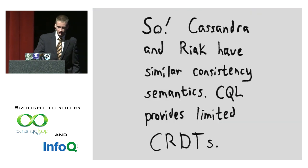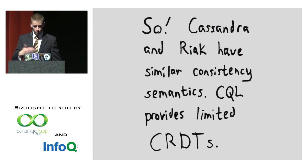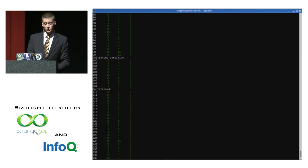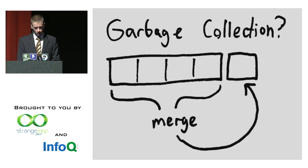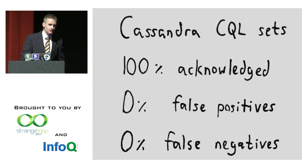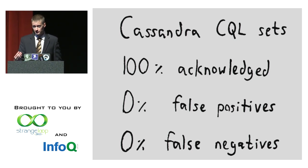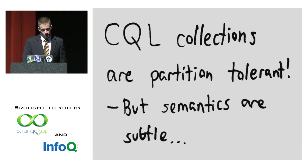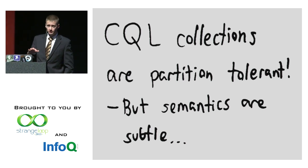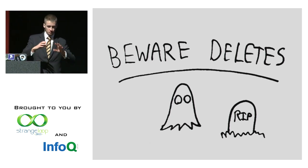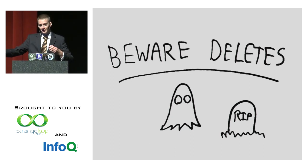What happens if you actually write to a Cassandra data structure? They have CQL — a new query language — and one of the things in CQL is collections, which are basically limited CRDTs. You can do writes to a CQL set or list, and every one of them, even in the presence of a partition, will succeed. Latencies will be phenomenally low because you're writing everything to distinct cells. At the end, you might see 100% of acknowledged writes succeed — it's not ordered, not consistent in a CAP sense, but it is safe.